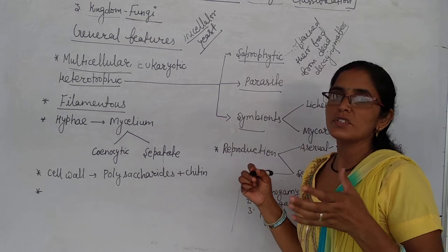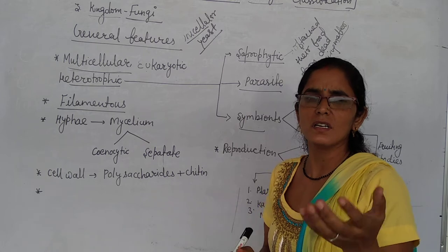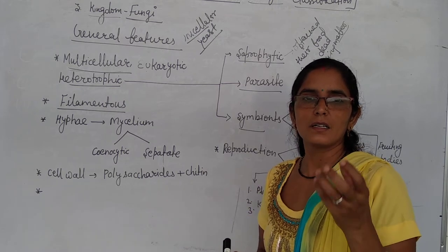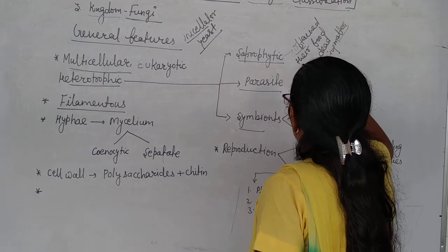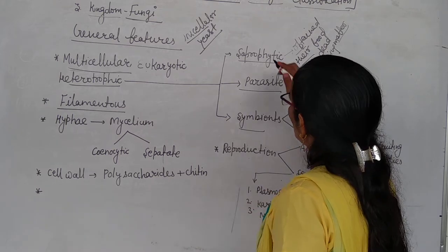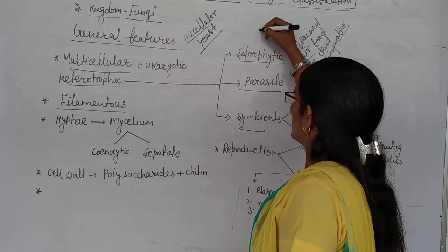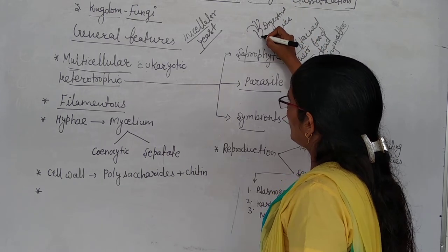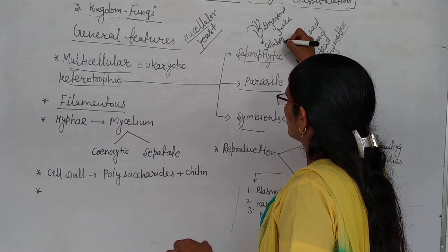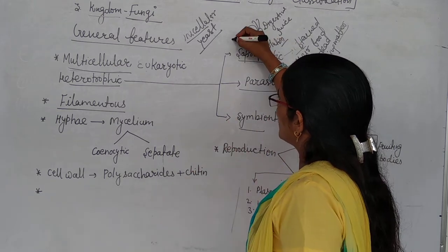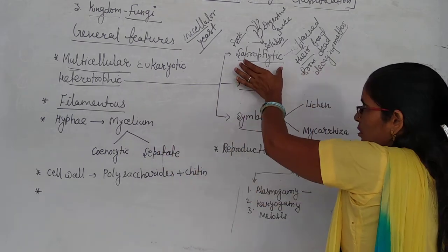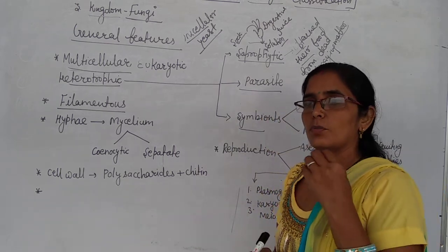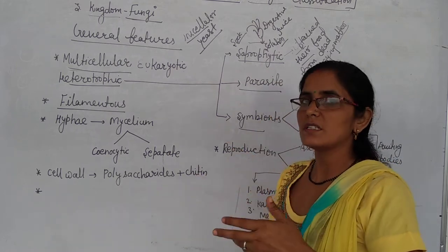The most important thing is that they have to digest food externally. For example, if this is food, first they will add some digestive juices to digest it into solution form. Then they intake it. This is saprophytic mode of nutrition. For example, bread mold - they secrete digestive juices to digest the food externally, then they intake it.